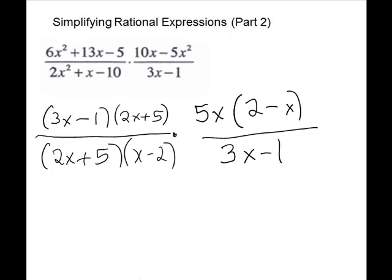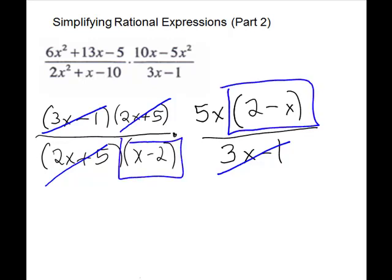Now, we will try to cancel anything that we can. So we can go on our diagonals. The 3x minus 1 will divide out. Vertically, the 2x plus 5 will divide out. And if you notice it, you have opposites here.